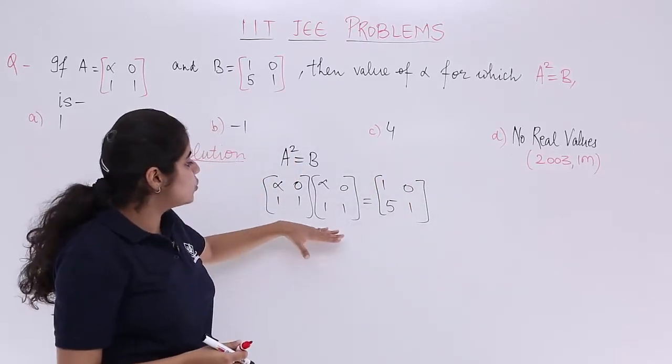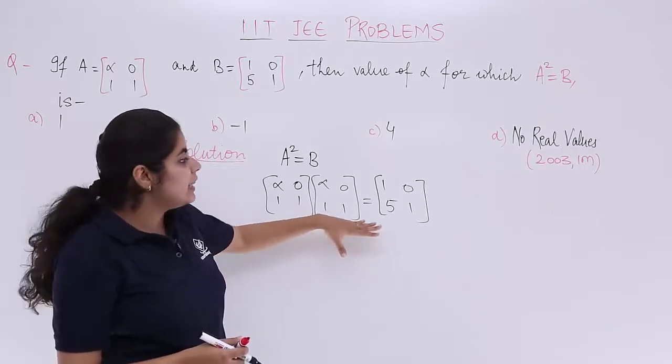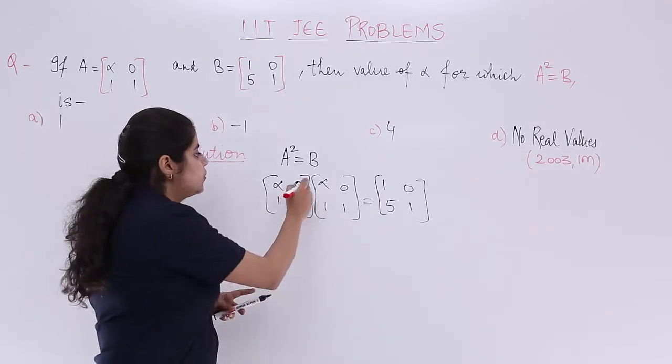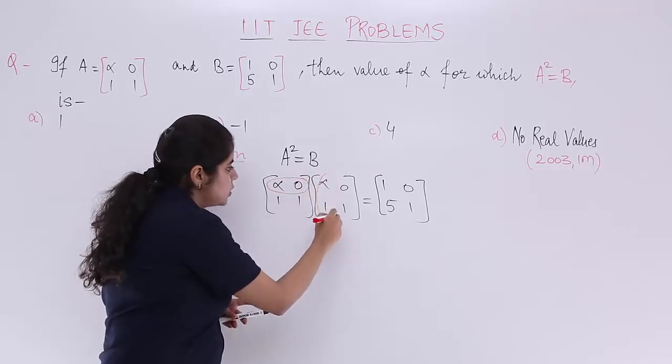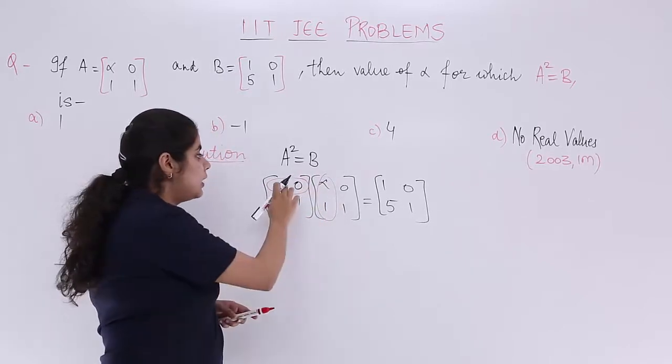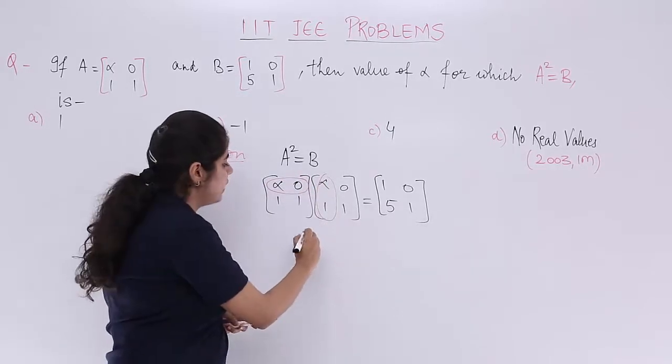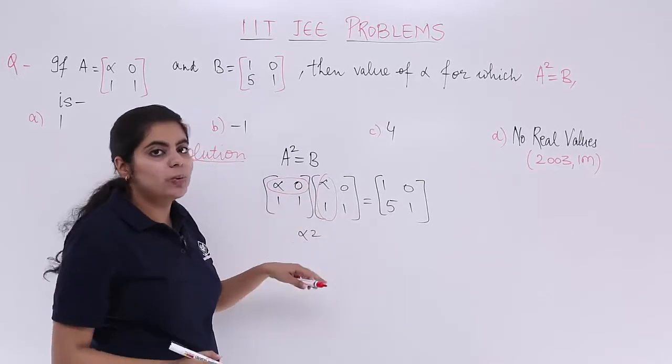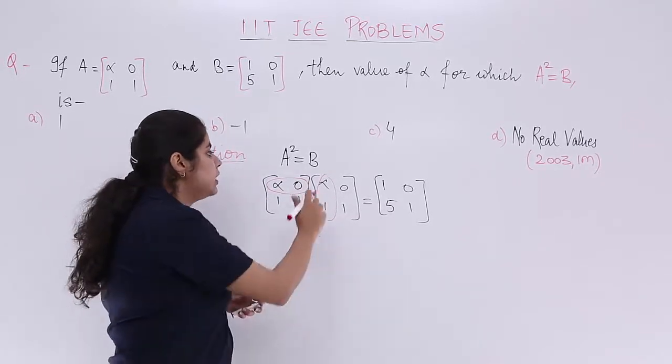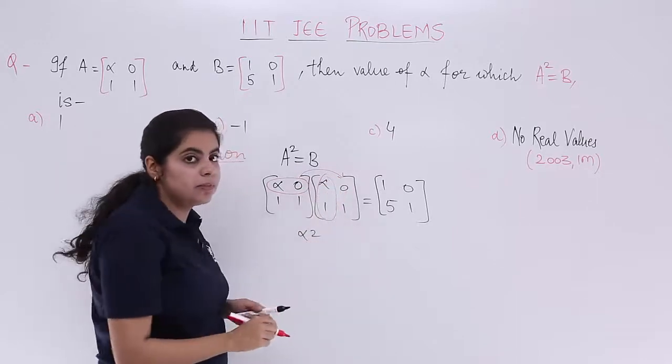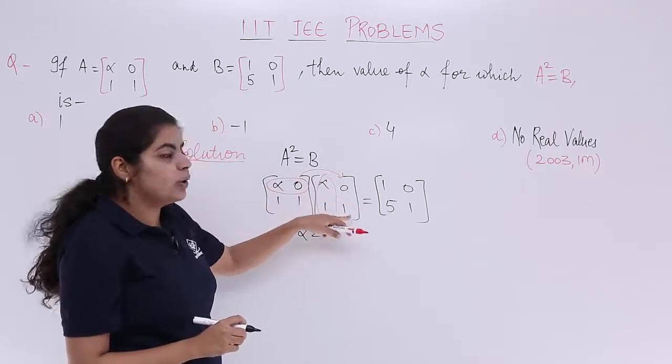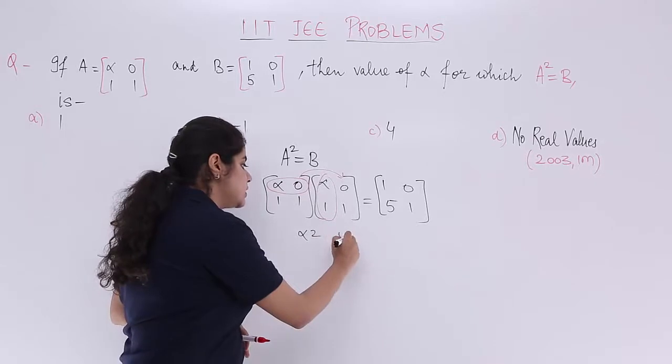Now what are we supposed to do? We are supposed to multiply and then equate and compare. So first row first column: that makes alpha × alpha = alpha², 0 × 1 = 0. Similarly first row and second column: alpha × 0 = 0, 0 × 1 = 0, so it is 0.